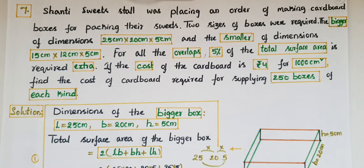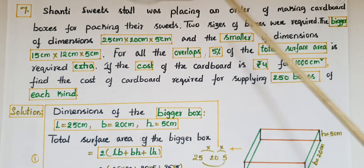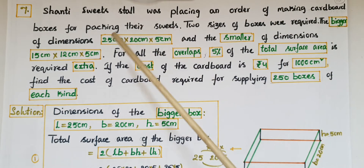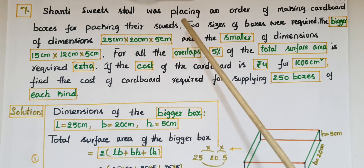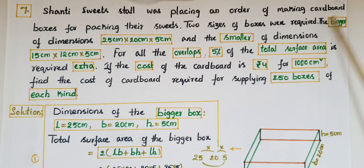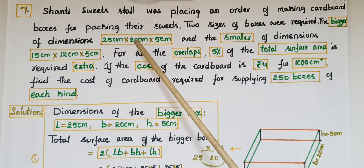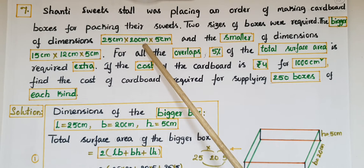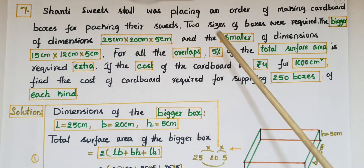Hello everyone, today I am going to tell the solutions of Exercise 13.1 from Surface Areas and Volumes from NCERT Class 9. This is the seventh problem: Shanti Sweets Stall was placing an order for making cardboard boxes for packing their sweets. Two sizes of boxes were required — the bigger of dimensions 25 cm × 20 cm × 5 cm.